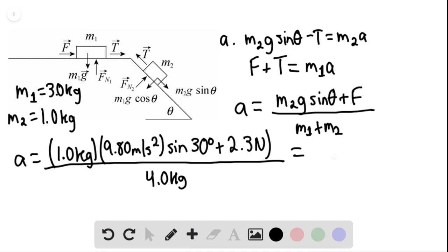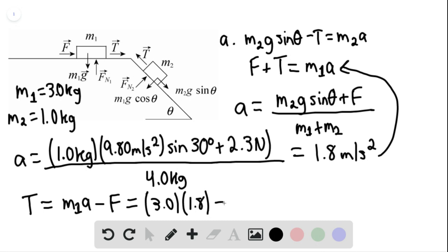And we find that the acceleration here is 1.8, approximately 1.8 meters per second squared. We're going to plug back into the first equation simply because it's easier. And we can say that here, the tension force would then be equal to m sub 1 A minus the force F. And this would be equal to 3.0 times 1.8 minus 2.3.